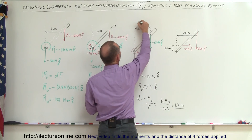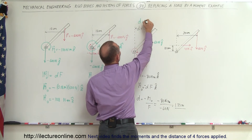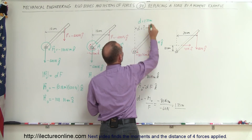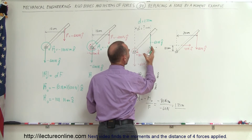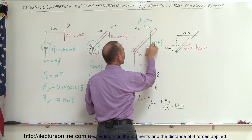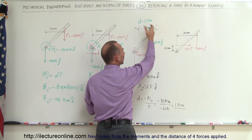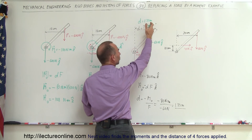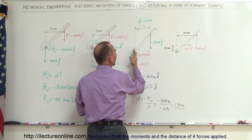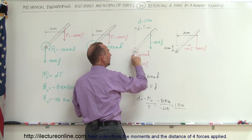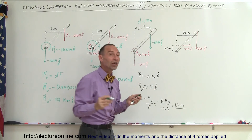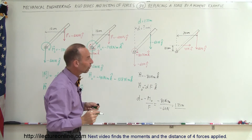The distance must equal 1.33 meters. By moving the force this distance, the moment disappears — it is accounted for by the force acting at this location 1.33 meters away — and the sum of forces in the y direction has not changed, so they remain equivalent.